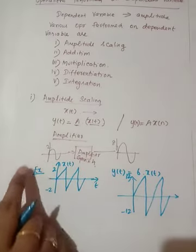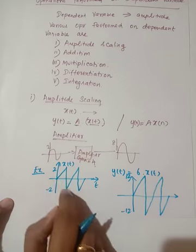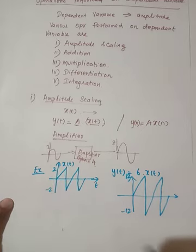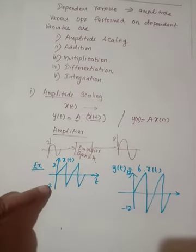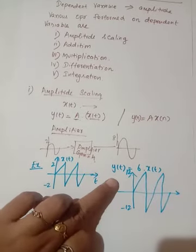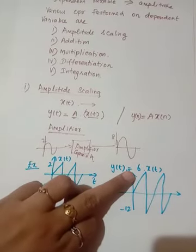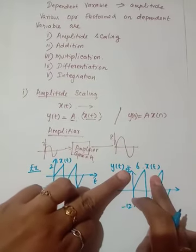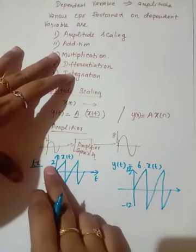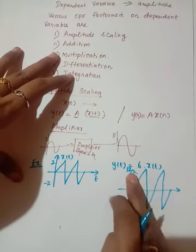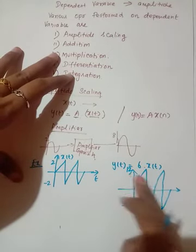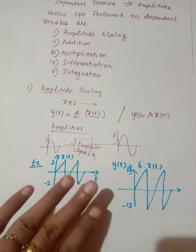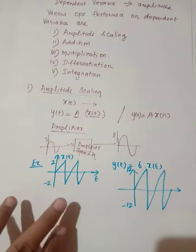Consider a continuous time signal — here it is a sawtooth waveform having an amplitude of 2 and minus 2. Now, we are going to perform amplitude scaling by a factor of 6, giving 6·x(t). So here, 2 is multiplied by 6, and the amplitude is scaled to 12. This is amplitude scaling — it is very simple.